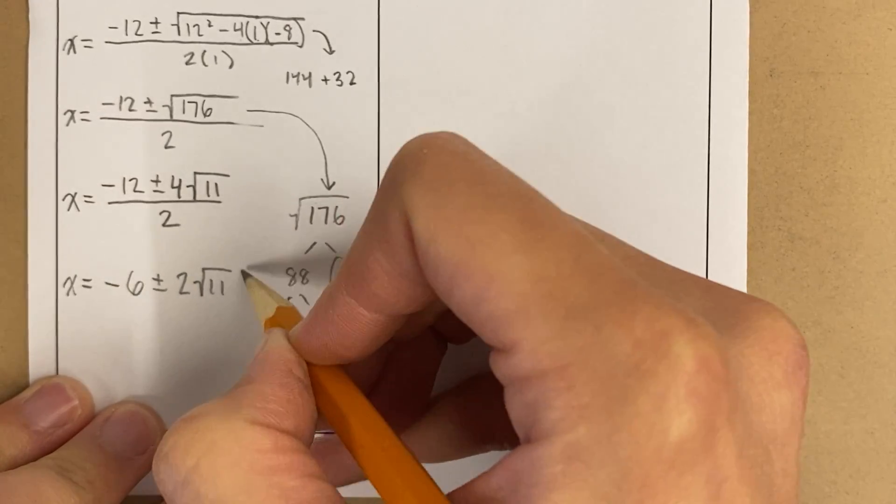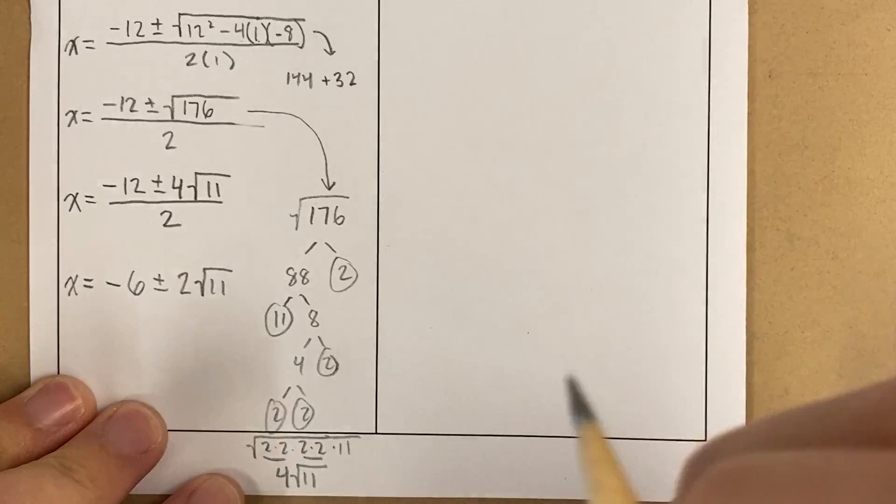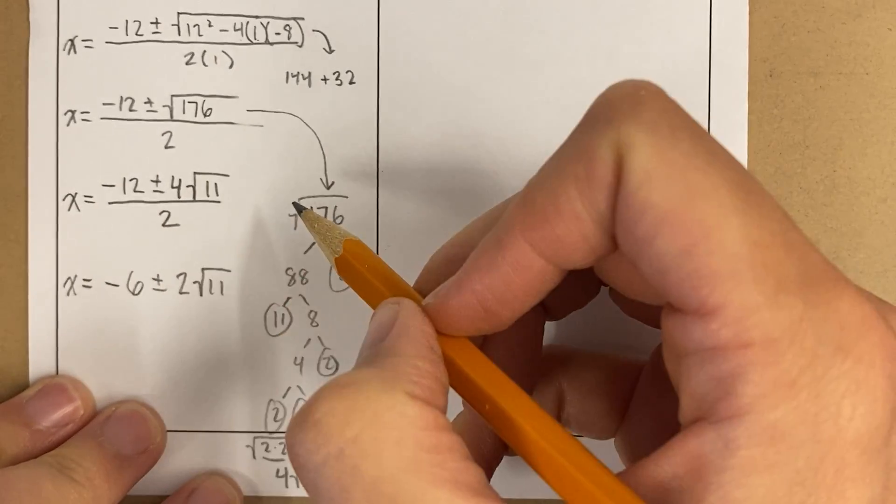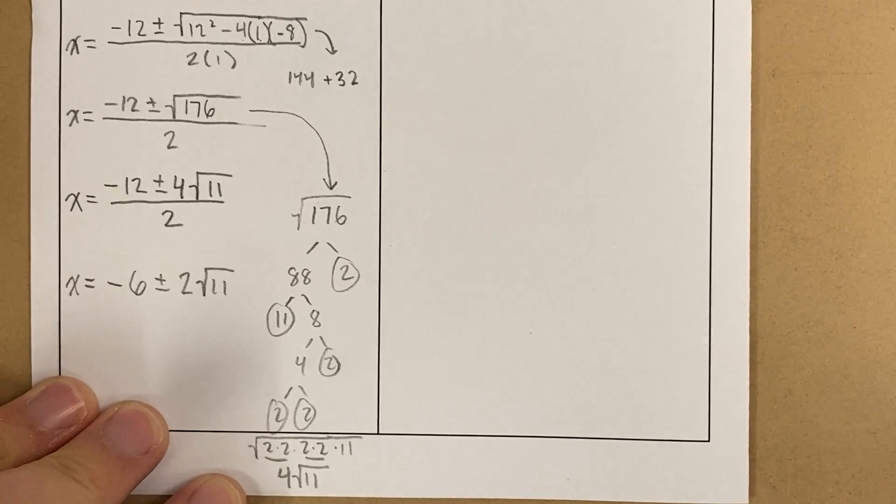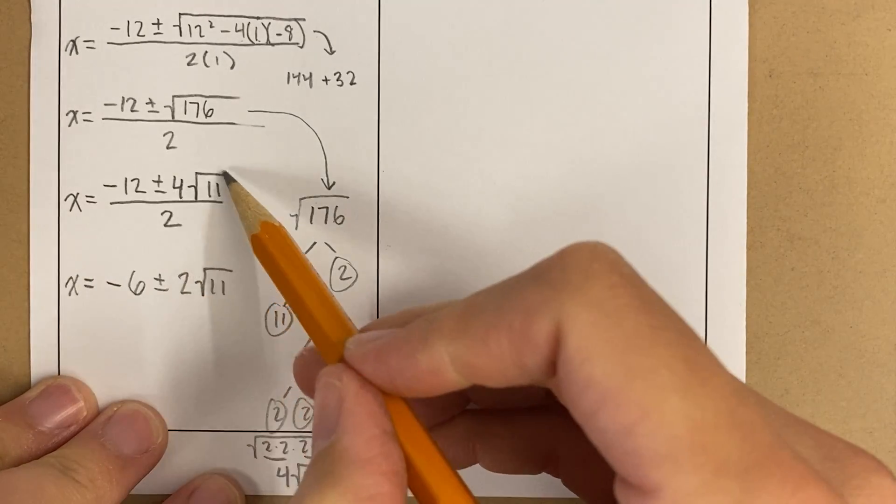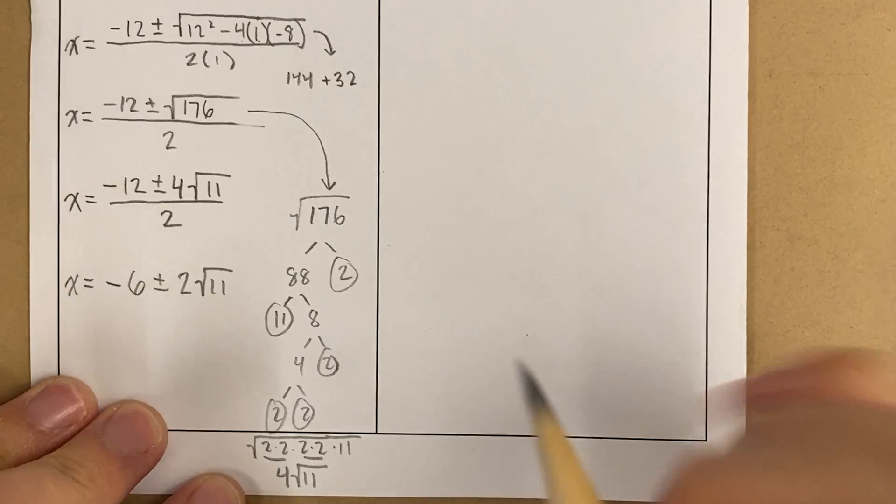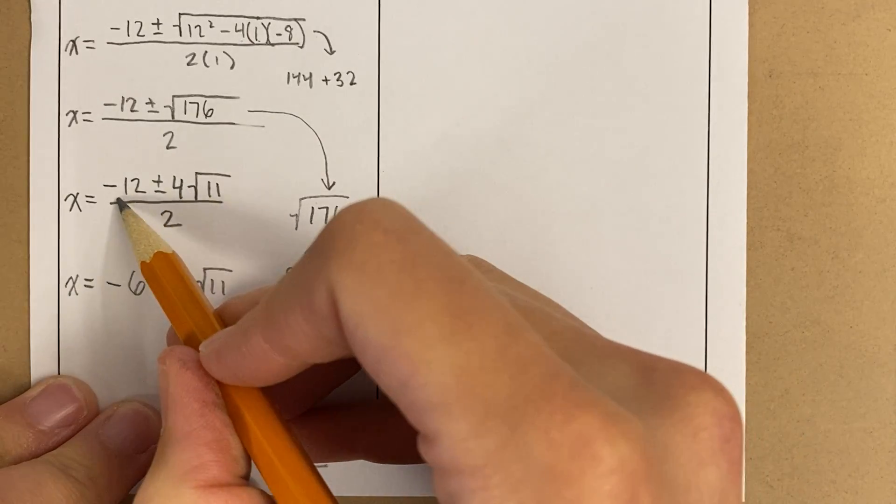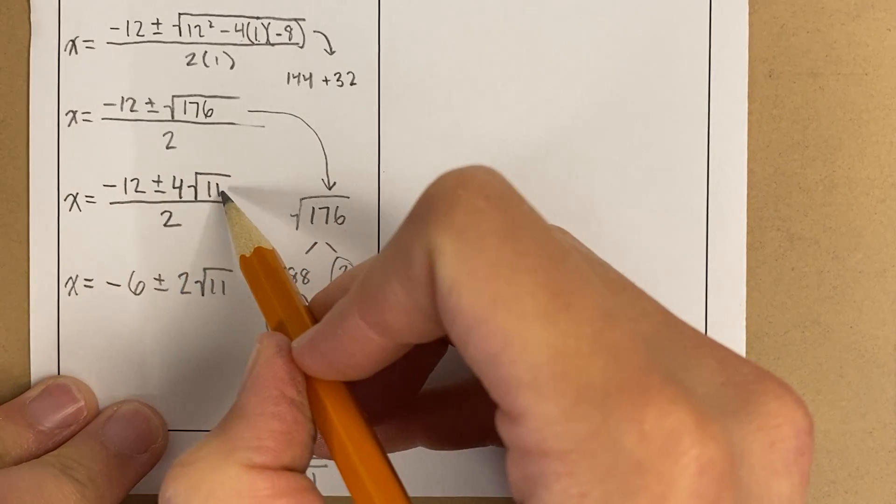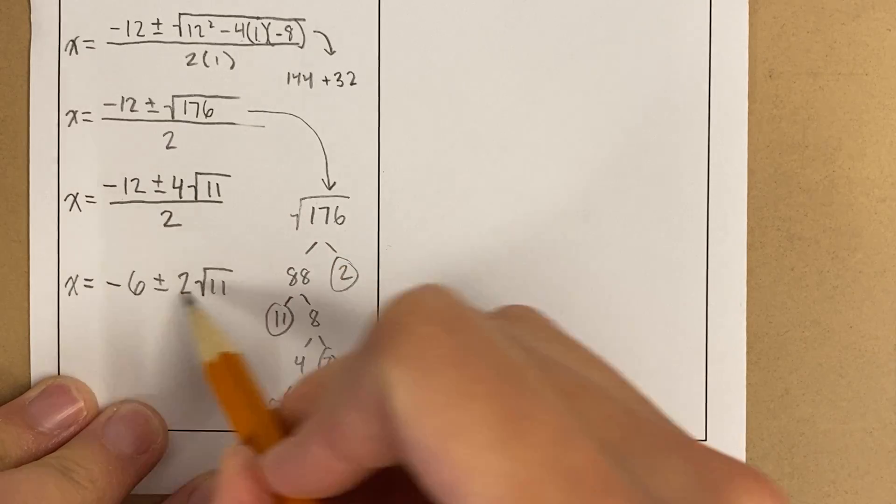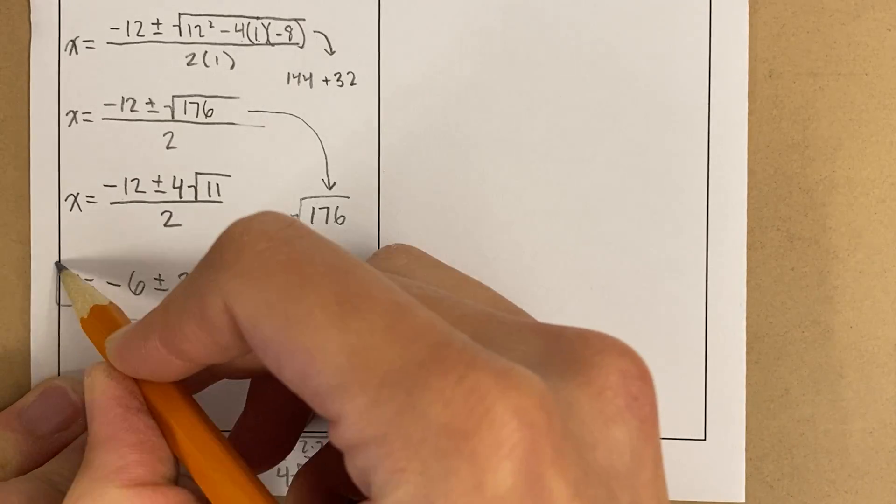Okay, now notice this root 11 does not simplify. You can treat this almost like a variable, like an x, right? Just the way that we don't touch a variable because we don't know what the value is, we don't touch an irrational number because it's like a crazy value. So this is almost like negative 12 plus 4x, right? And I'm just dividing by 2. So this is your answer.